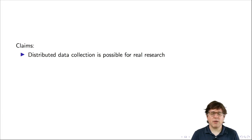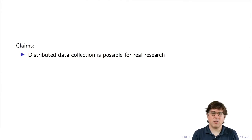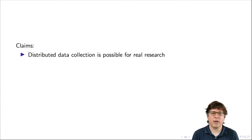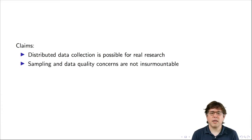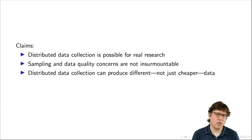In this video, through three examples, I'd like to make three claims. First, distributed data collection is possible for real research — having volunteers or citizen scientists participate in your data collection is totally doable. Second, sampling and data quality concerns are not insurmountable. Third, distributed data collection can produce different and not just cheaper data. I want to illustrate each of these three claims with a study.